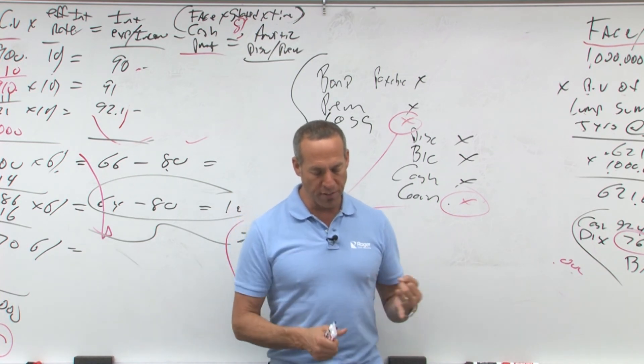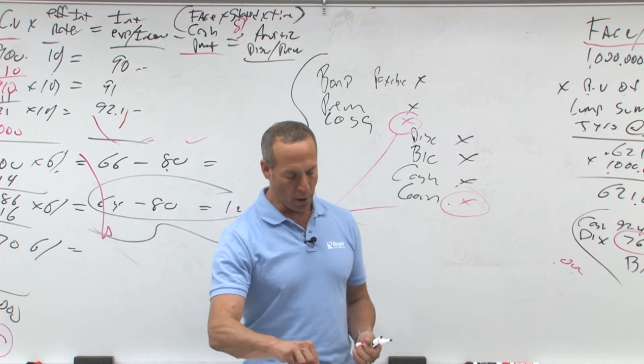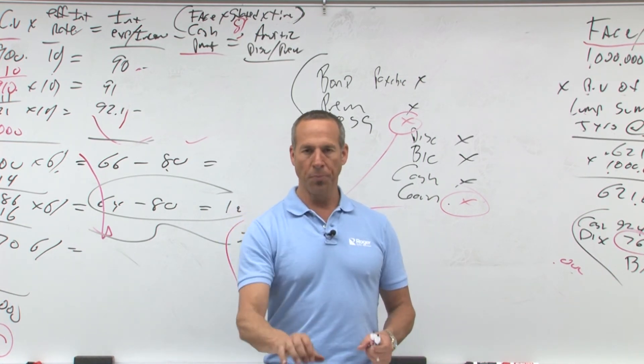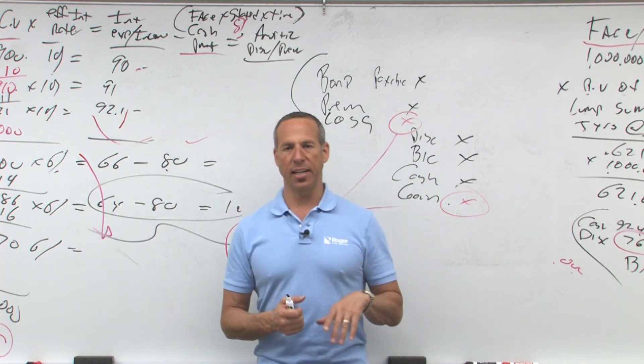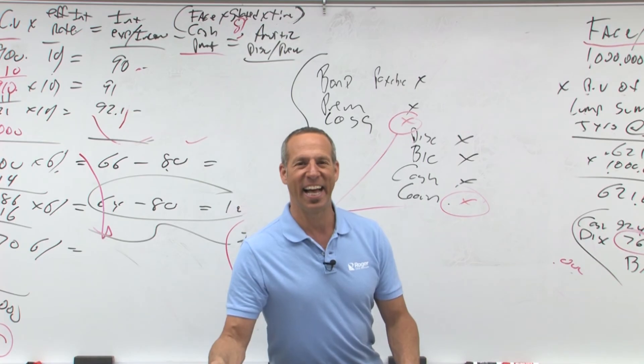It says, any interest or dividends earned are added to the sinking fund balance and reported as income. So any of those interest or dividends would also go to income as well, as far as that bond sinking fund. Okay? In a minute, we'll do some questions. Thank you.